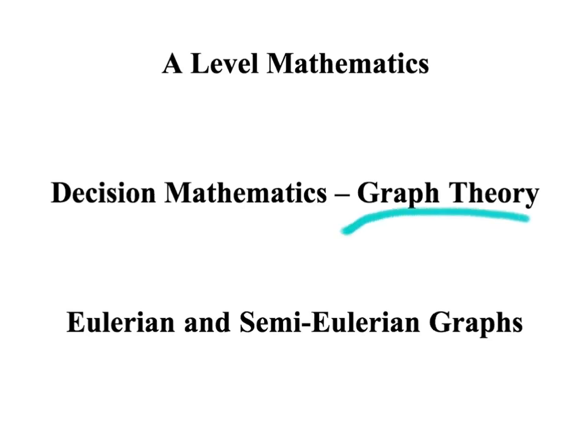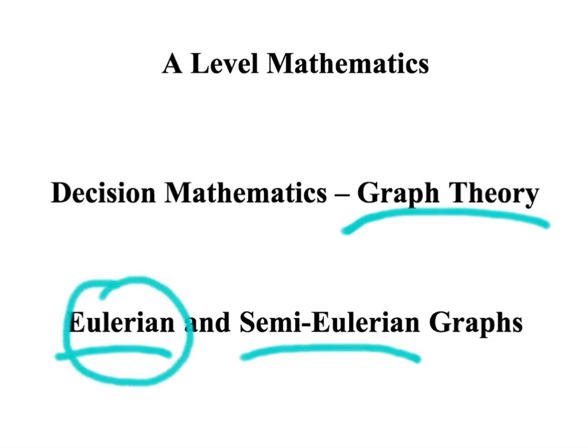Today we're going to be looking at a small aspect of graph theory, specifically definitions of whether graphs are Eulerian or semi-Eulerian. A key part of this presentation is being able to look at a graph and decide whether it is Eulerian or semi-Eulerian. These definitions are important in their own right but also have applications when we study network algorithms, and very specifically the Chinese Postman algorithm.